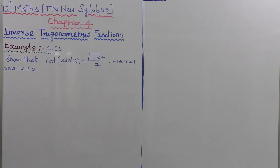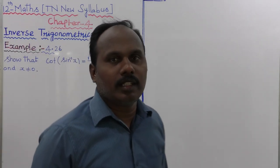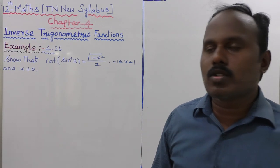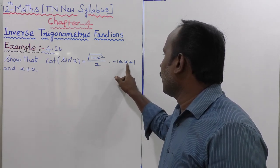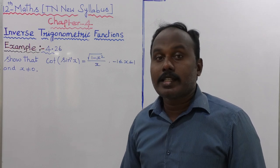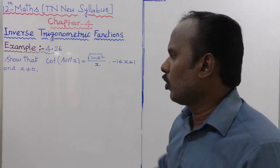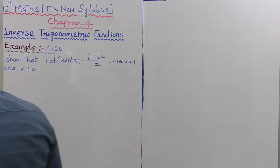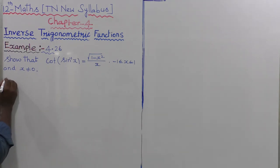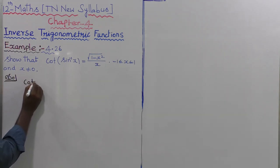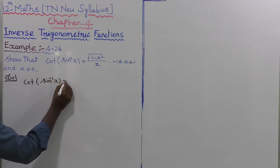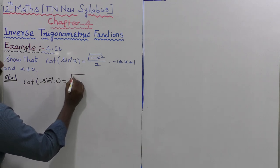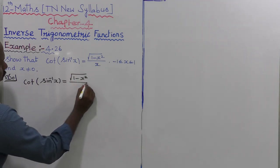Example 4.26 shows that cot of sin inverse of x is equal to root of 1 minus x square divided by x, where minus 1 is less than or equal to x is less than or equal to 1 and x is not equal to 0. That is the important point — the given equation is cot of sin inverse of x equal to root of 1 minus x square whole divided by x.